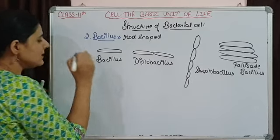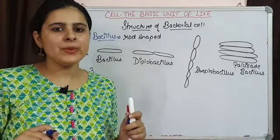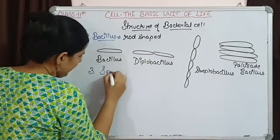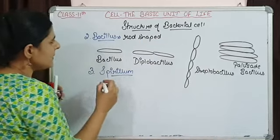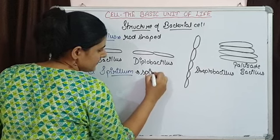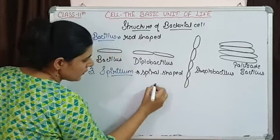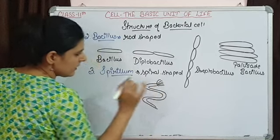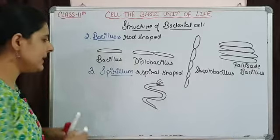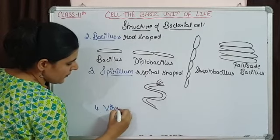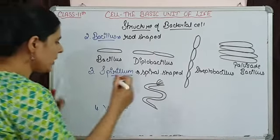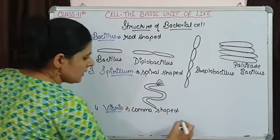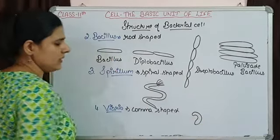The third shape of bacterial cells is spiral-shaped. These are known as spirillum — bacteria that are spirally arranged showing a curved body. The bacteria can also be comma-shaped, and we use the word vibrio for those, which show a comma-shaped structure.